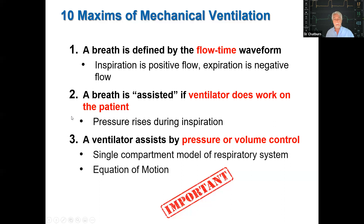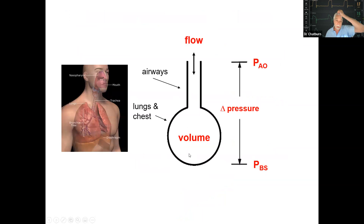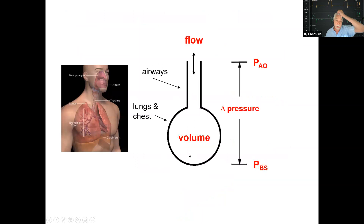Now we come to perhaps the most important central concept in mechanical ventilation and pulmonary function: the respiratory system is modeled mathematically as a system described by the equation of motion. We have a graphical model — which can be simulated as a straw connected to a balloon — representing the complex system of airways. This allows us to describe the patient-ventilator interaction with only three basic variables: the pressure difference across the system, the flow in and out, and the volume change within the system.